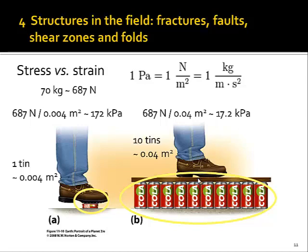However, if you distribute the load across ten tins, this can be taken by all ten tins and they will remain stable. We are loading them, we are applying a certain stress, but we are not achieving any strain. Another matter is relevant here: when you step off this Coke tin, obviously the deformed shape will remain. So we have accumulated, by applying a certain stress, a lasting, permanent strain onto this body — and you can see that afterwards, even if there is no longer any evidence that stress is acting on it.